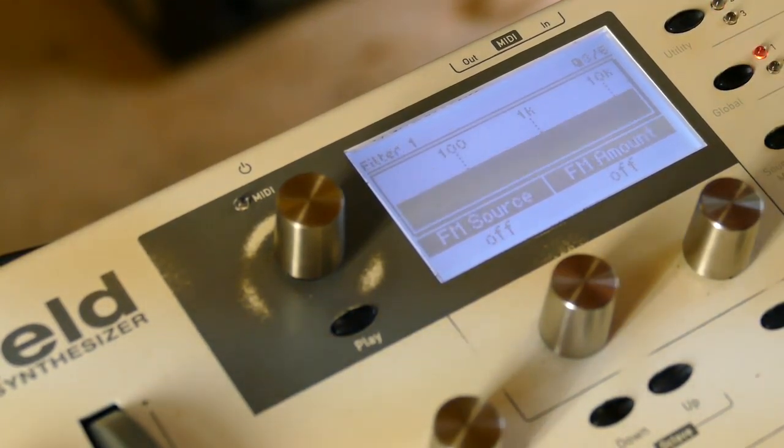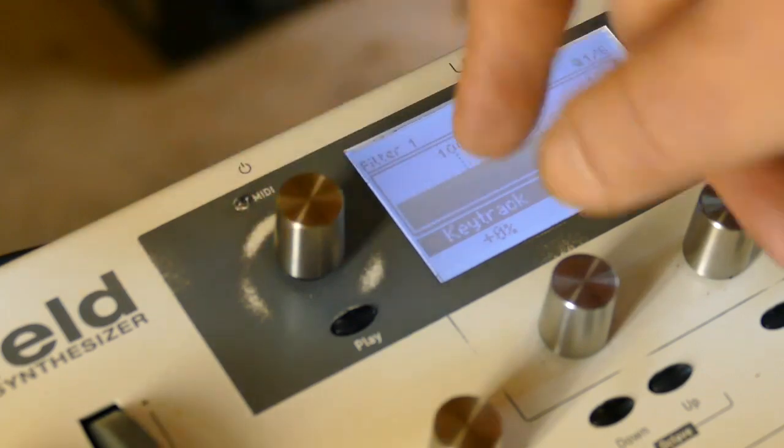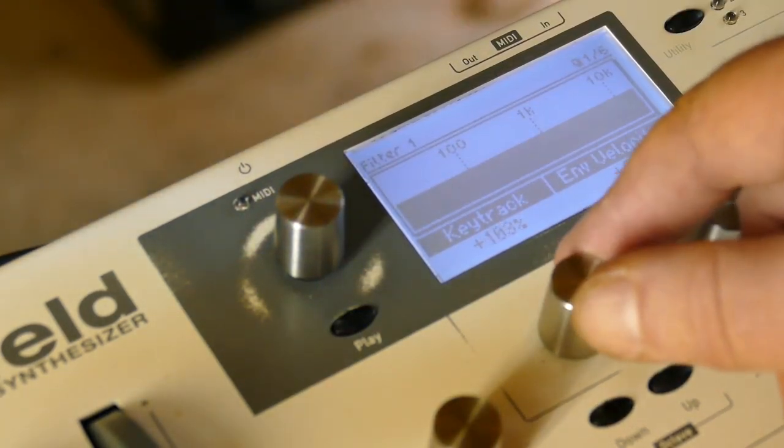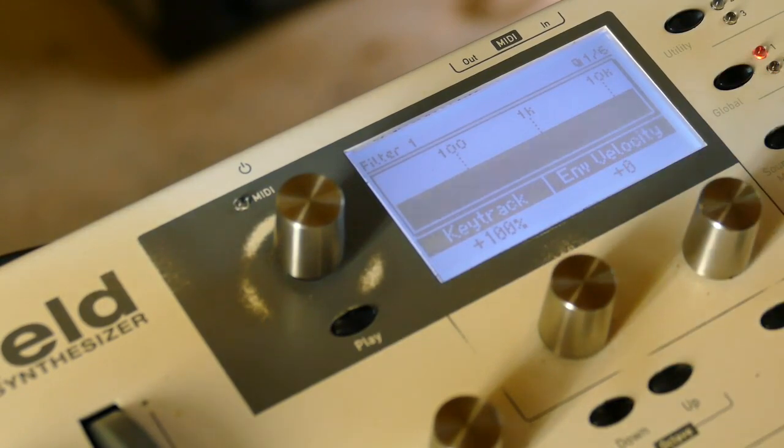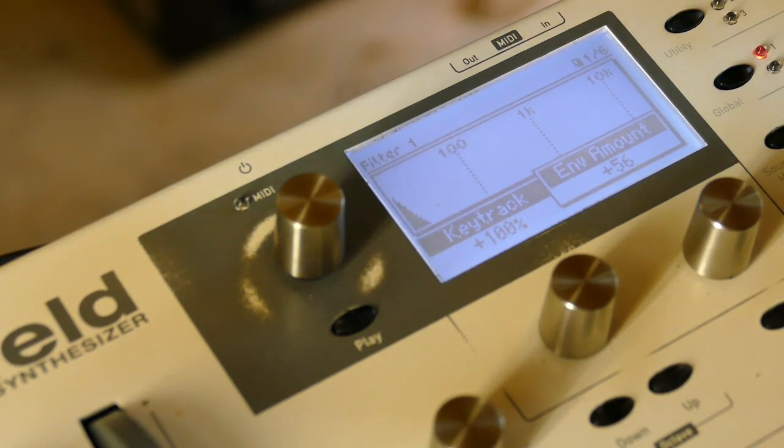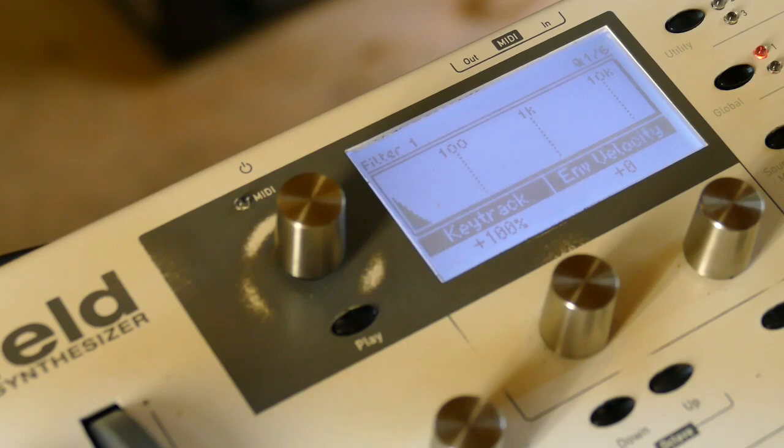Let's bring the filter into play. Go back, set the key track to 100%, set the resonance to about 42, set the type to 12 dB low pass, and set the amount to about 56. You can probably hear that recursively modulated filter.